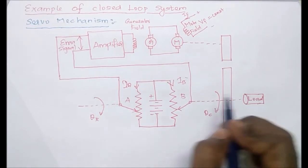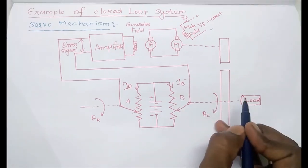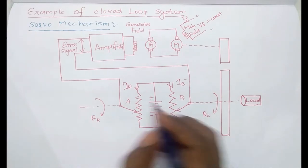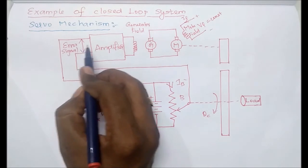Suppose the position of this load is to be changed—its resistive value either increases or decreases depending upon the position to be changed. Accordingly, error will be generated. This amplifier will amplify the error signal and give it to the field winding of this generator.